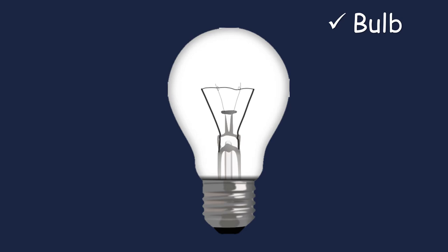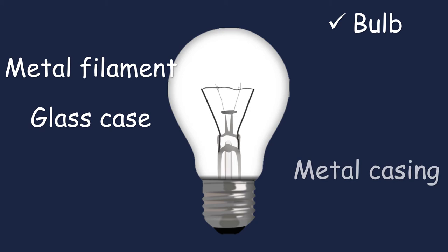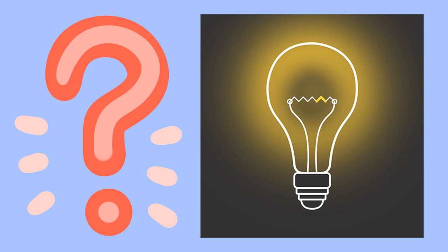What are the four parts of the bulb? The metal filament, glass case, and the metal casing and the tip. How does a bulb produce light? When an electric current flows through the metal filament of the bulb, the filament gets heated up and gets so hot that it glows and gives off light.